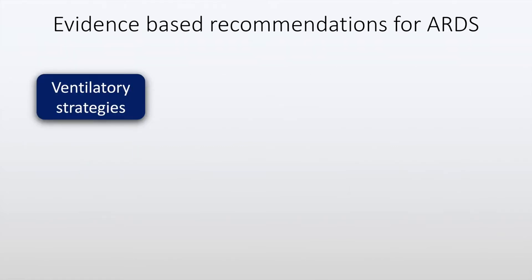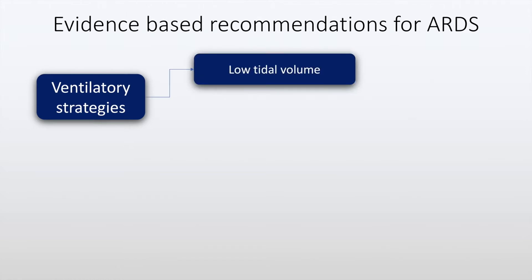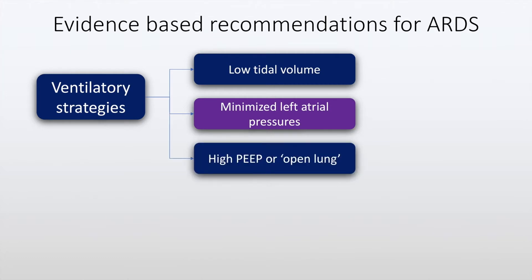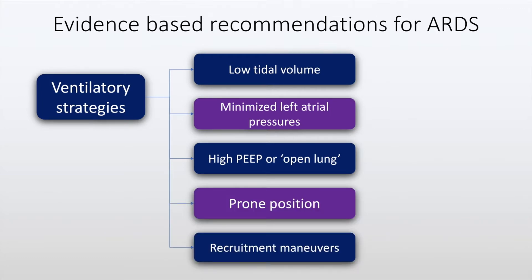The ventilatory strategies in Acute Respiratory Distress Syndrome in the ICU are of prime importance. These include low tidal volume ventilation, minimized left atrial pressures, high PEEP or open lung strategy — where PEEP means positive end expiratory pressure — prone ventilation, and recruitment maneuvers. Of these, low tidal volume is found to have survival benefit.